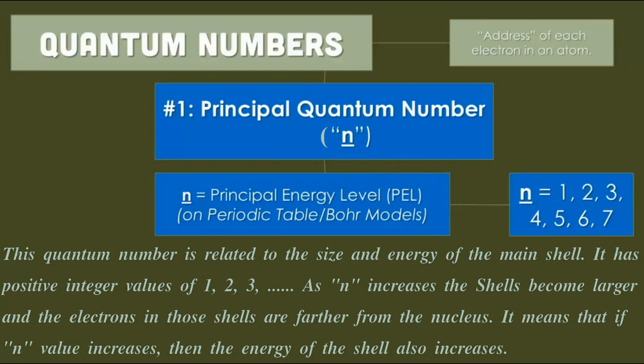It has positive integer values of 1, 2, 3, and so on. As n increases, the shells become larger and the electrons in those shells are farther from the nucleus.